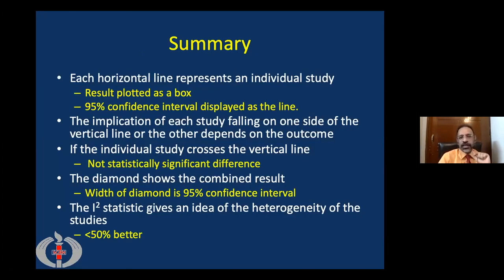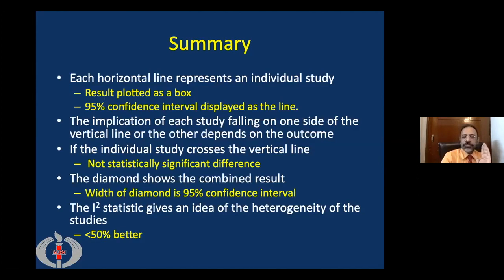To summarize: each horizontal line in a forest plot represents an individual study. The result is plotted as a box where the size represents the weight of that study, and the 95% confidence interval is displayed as a line. If the individual study crosses the vertical line of null effect, that study does not give a statistically significant difference. The diamond shows the combined result, and the width of the diamond is the 95% confidence interval. The I-squared statistic gives an idea of heterogeneity; it is better if I-squared is less than 50%, or even better if less than 40%. Thank you for your patience.